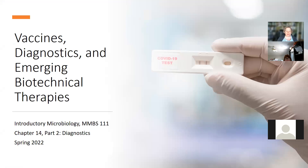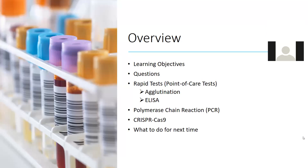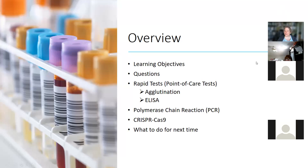Today we're going to continue our discussion of Chapter 14, specifically covering diagnostics and emerging biotechnical therapy. We'll go over the learning objectives, answer any questions, talk about rapid tests — also called point of care tests — specifically agglutination and ELISA, then polymerase chain reaction (PCR) and CRISPR, and finally what to do for next time.